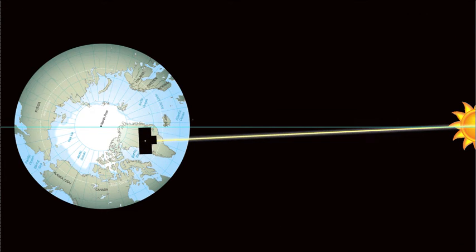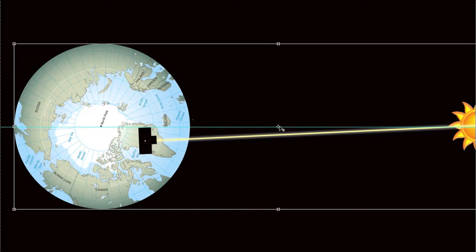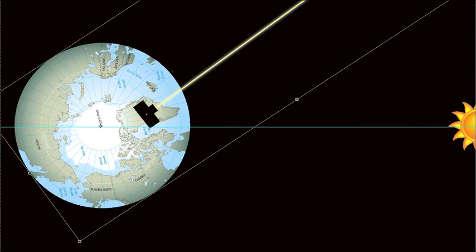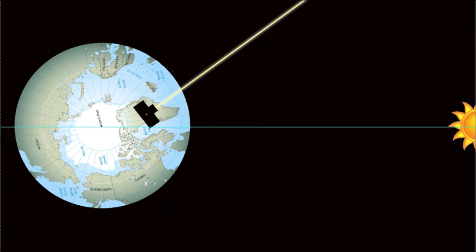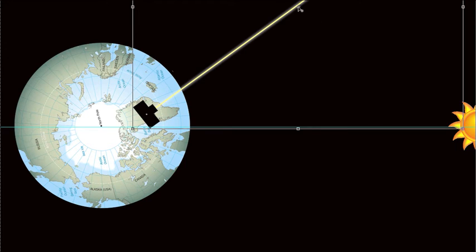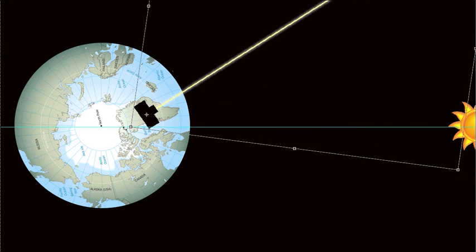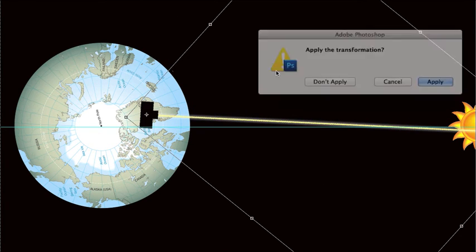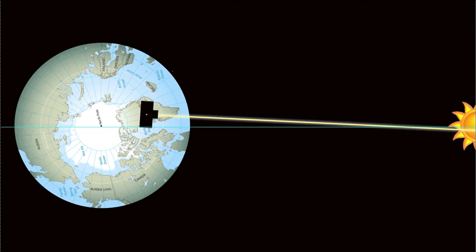I'm just going to do this a couple more times so you get the point. So this is what's actually happening on the Earth. The globe rotates counterclockwise. And the cameraman, in order to keep the sun in his sights, rotates on his axis clockwise.